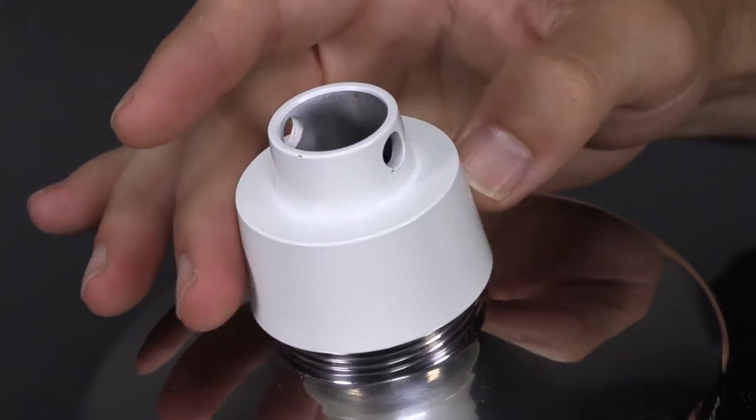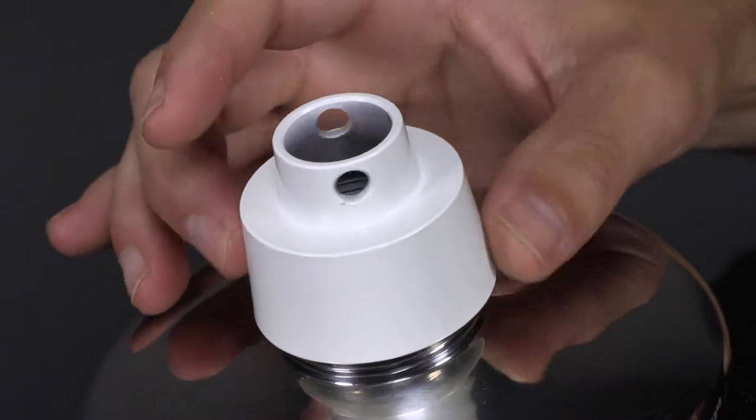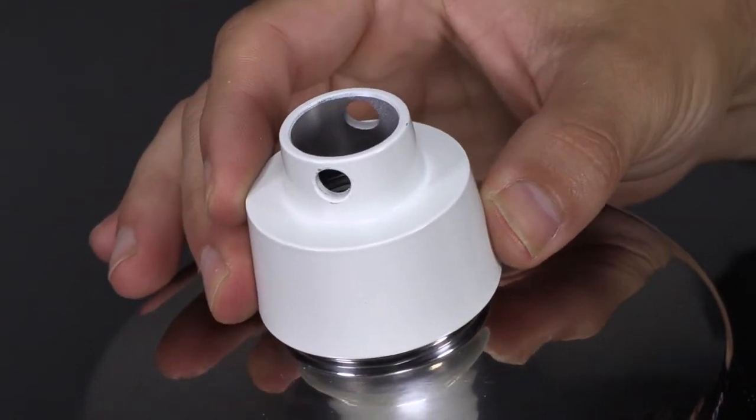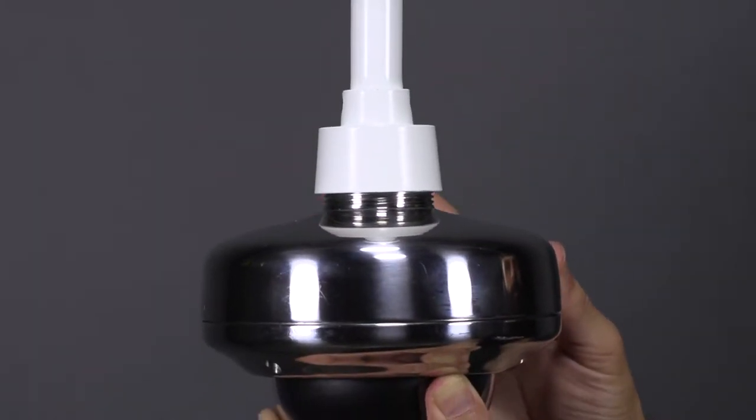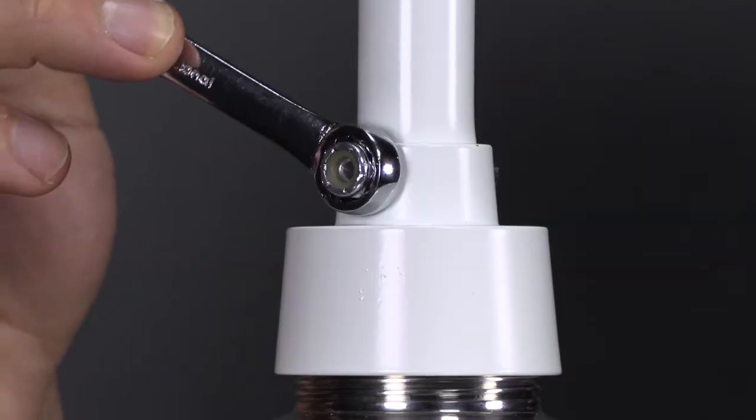To install, simply thread the adapter onto the inch and a half male end of the camera accessory, then attach the adapter onto the camera pole with the included bolt and locking nut.